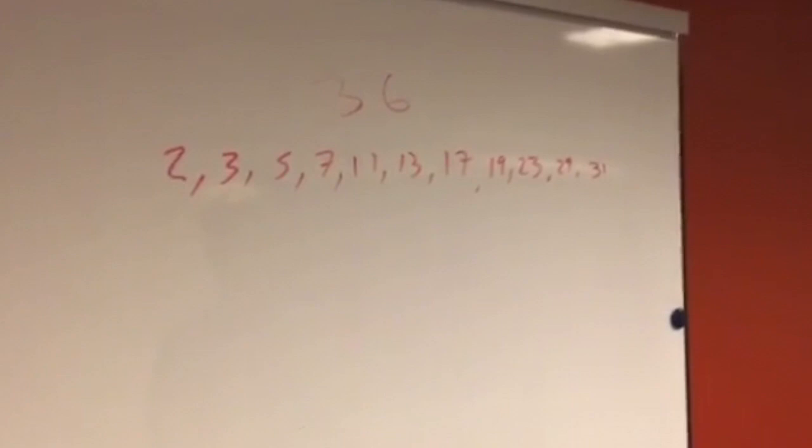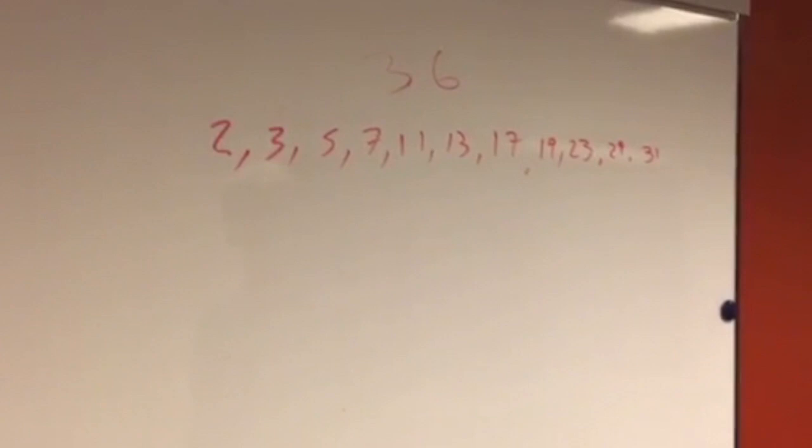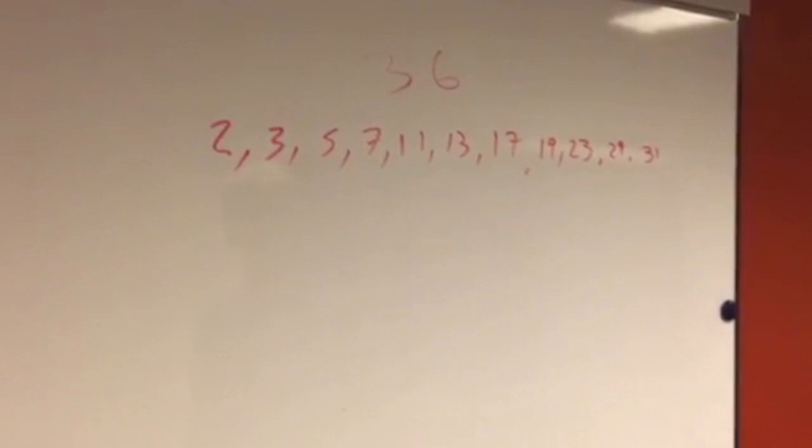First, we're going to look at all pairs of prime numbers whose sum adds up to thirty-six. In order to take a better look at this and how Goldbach's conjecture works, which states that there's at least one set of prime numbers greater than four that add up to thirty-six, we're going to look at thirty-six and all the prime factors.